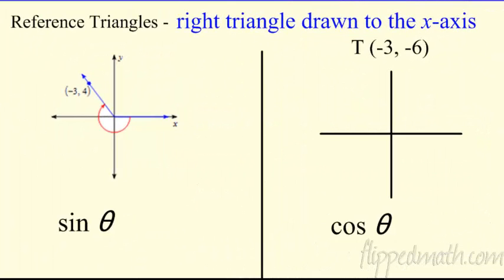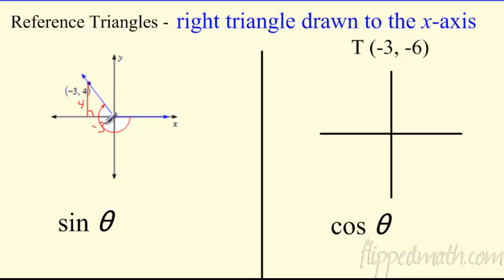Let's start building reference triangles. A reference triangle is when we draw a right triangle down to the x-axis. In standard position, you have a terminal side with a point on it, and you drop a perpendicular to the x-axis. So with the point negative three, positive four, we need to find the hypotenuse.